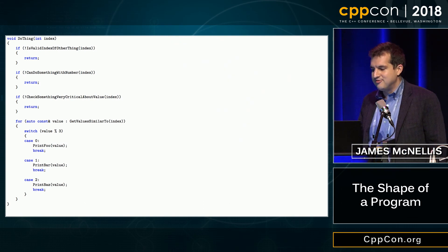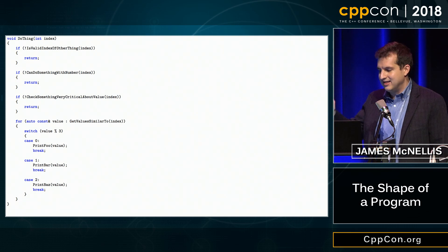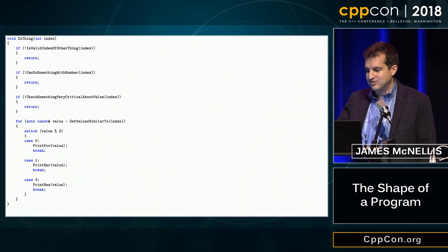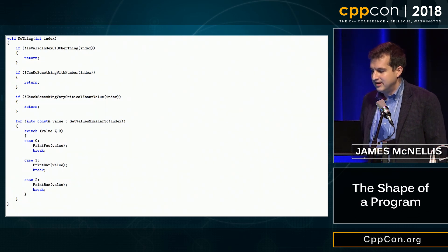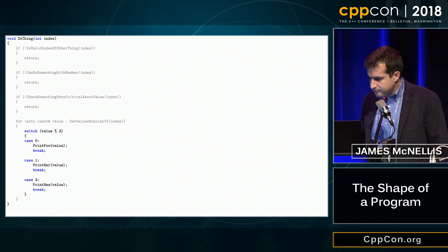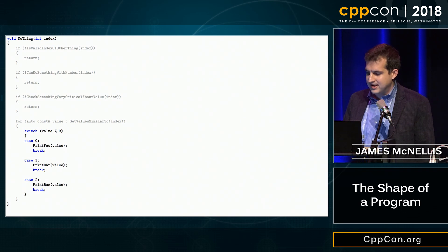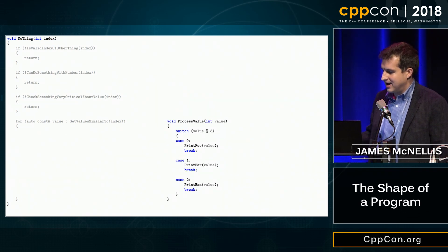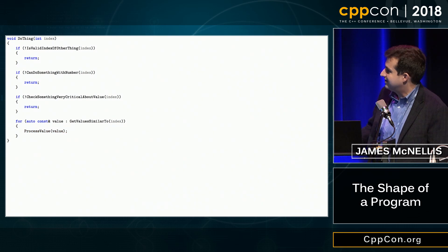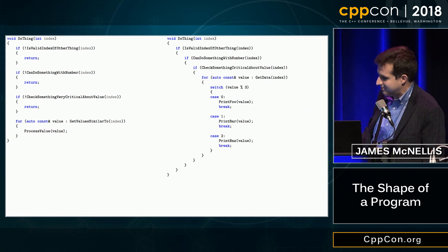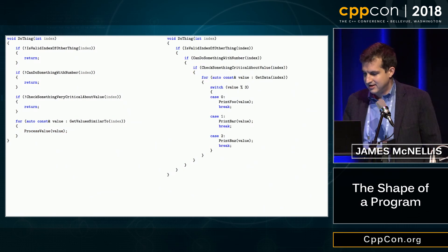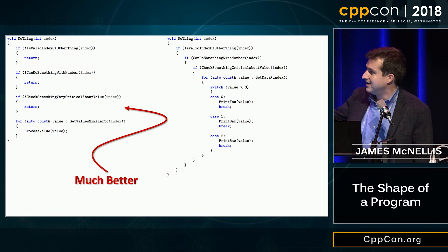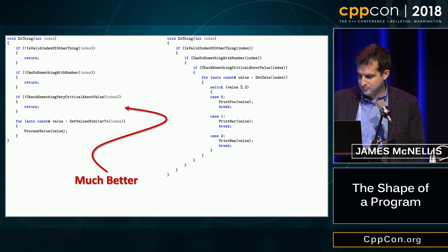The other refactoring we can do is to extract functionality into a separate function. Here, for example, this switch statement is trivially extractable. We take it, move it over here, put it in its own function, add a call to the function, and now our function is simpler than the original. Just to clarify, this is the better one over here.